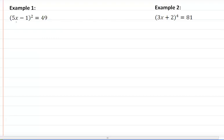So in our first example here, we have the second power which means we are going to take the square root here. So we are going to get 5x minus 1 equal to plus or minus 7.